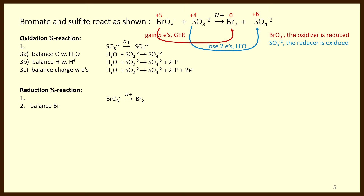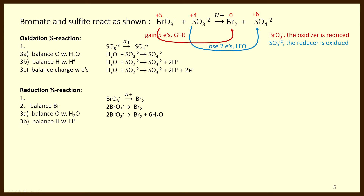Next we move to the reduction half-reaction. Step two says to balance atoms other than hydrogen and oxygen. Bromine is not balanced, so we add a coefficient of two in front of the bromate. Step 3a says balance the oxygen with water — we add six H2O to the right because there are six oxygens on the left. Step 3b says balance the hydrogen with H+. I count 12 hydrogens on the right, so we add 12 H+ on the left.